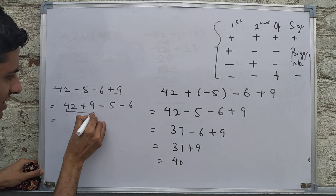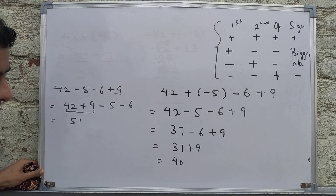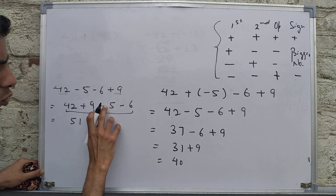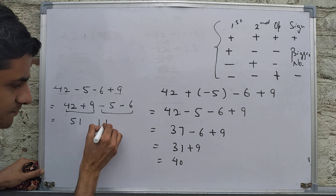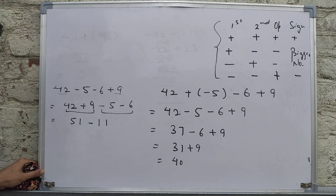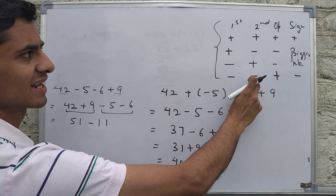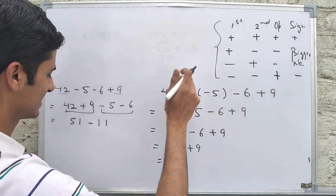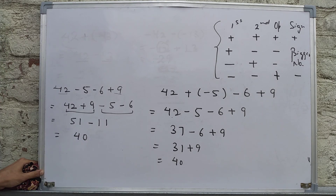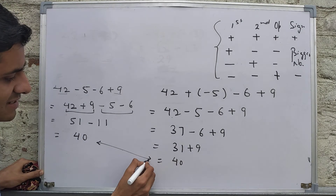Solving: 42 + 9 = 51. For -5 - 6, both numbers are negative — we add and the sign is negative, giving -11. Then 51 - 11 = 40. That is the same answer, confirming both methods work.